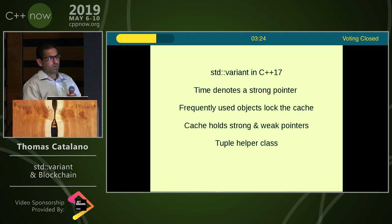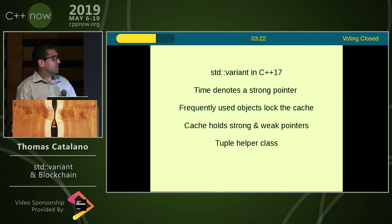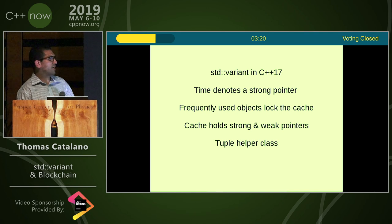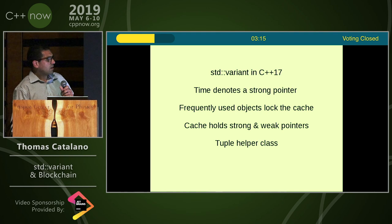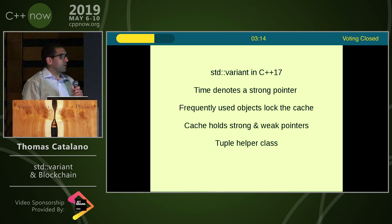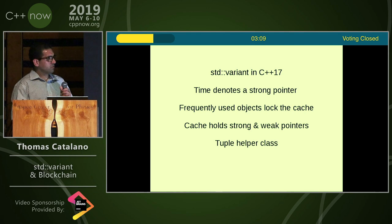Now with the standard variant in place as part of the standard library, when you write this interface you can use this library because we now have a strong pointer that denotes frequently used objects.